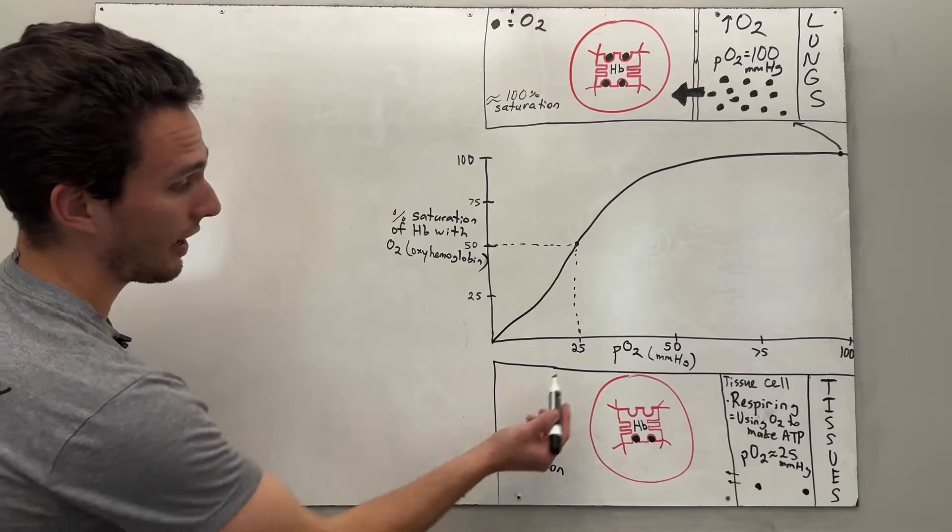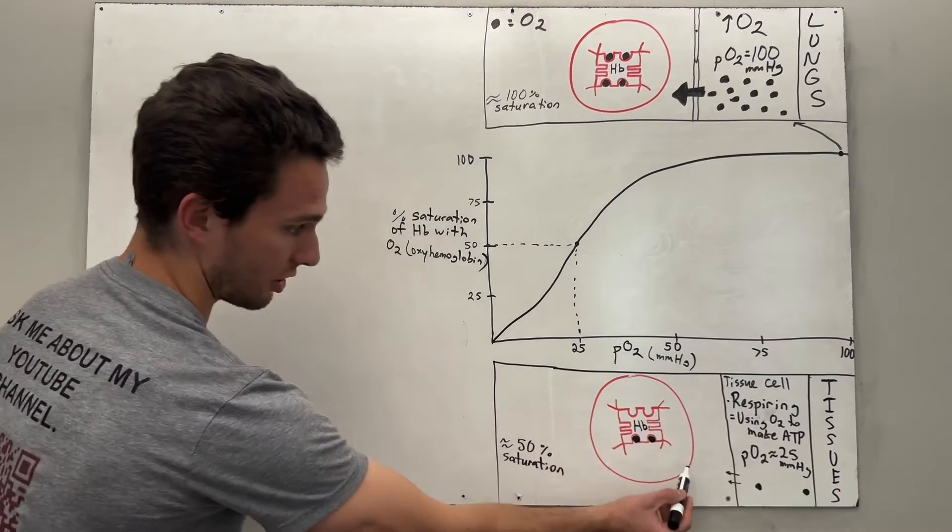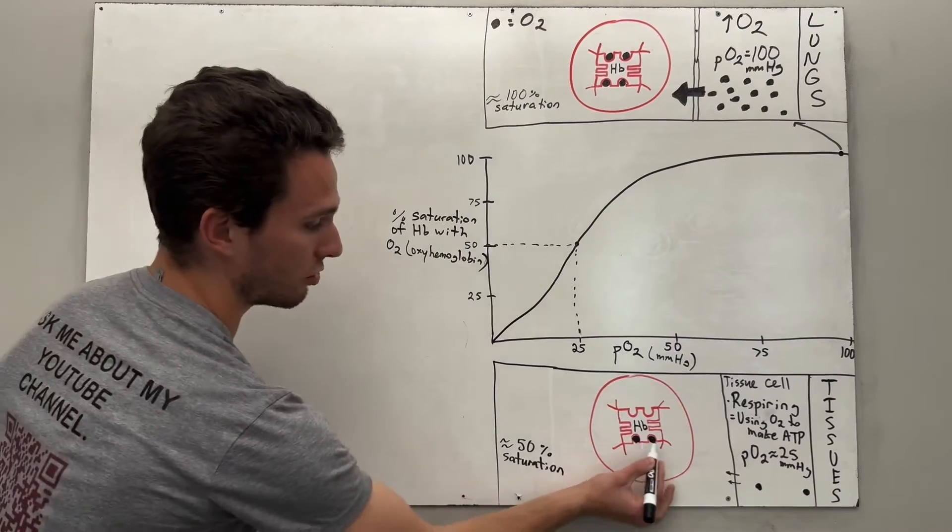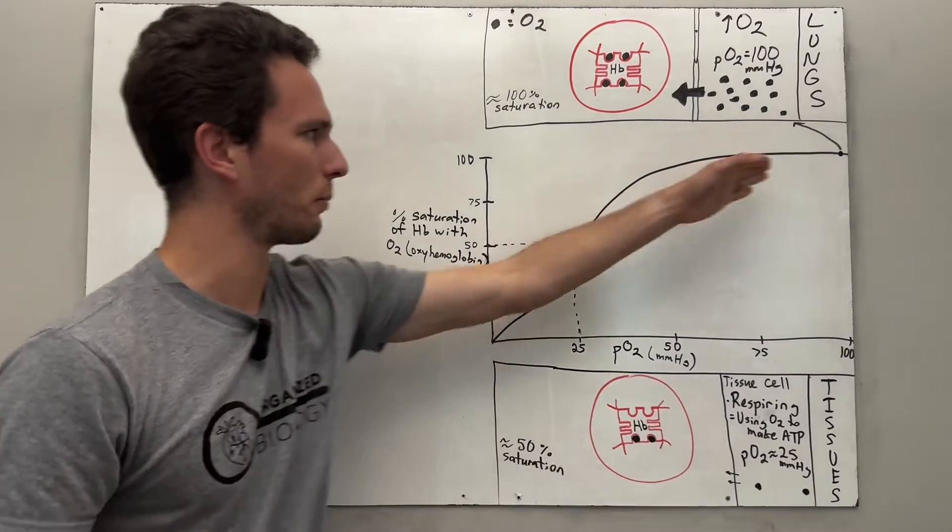And lo and behold, look at our graph, right? At the 25 partial pressure of oxygen, we are at 50% hemoglobin saturation with oxygen being the two of the four sites. So that's explaining a couple different points in the graph.